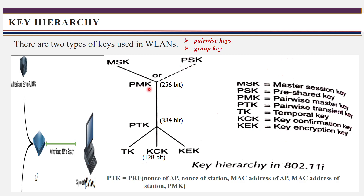With the help of this PMK, next we can get the PTK — pairwise transient key — which is 384 bits long. To get this PTK from PMK, we use the PRF, which means pseudo random function. You apply the pseudo random function to a message that contains: nonce of access point, nonce of station, MAC address of access point, MAC address of station, and the PMK.